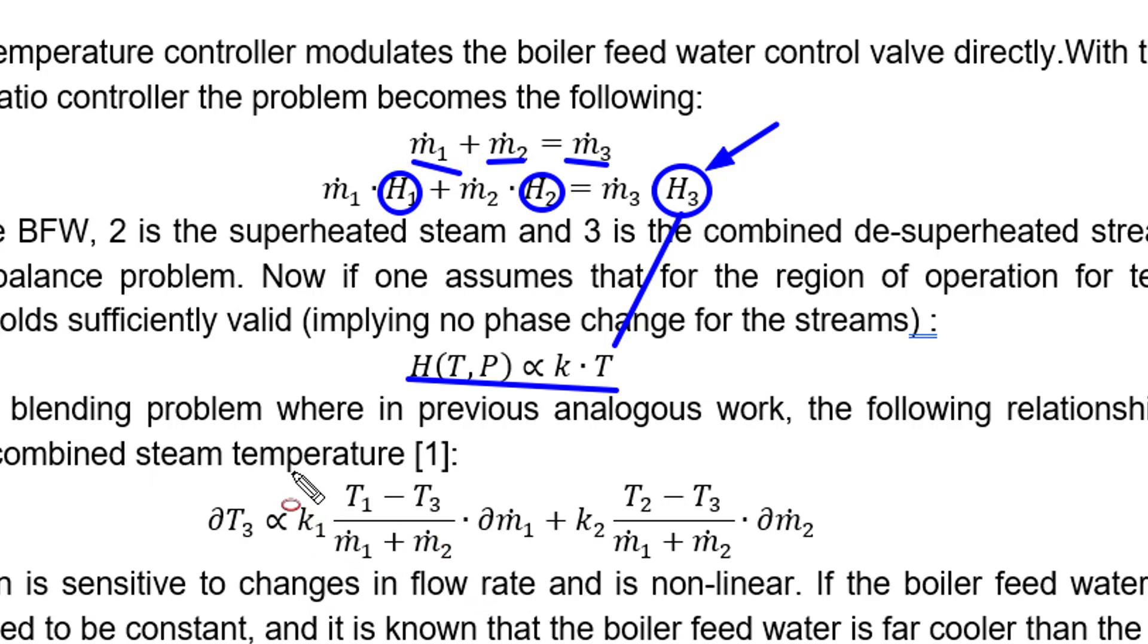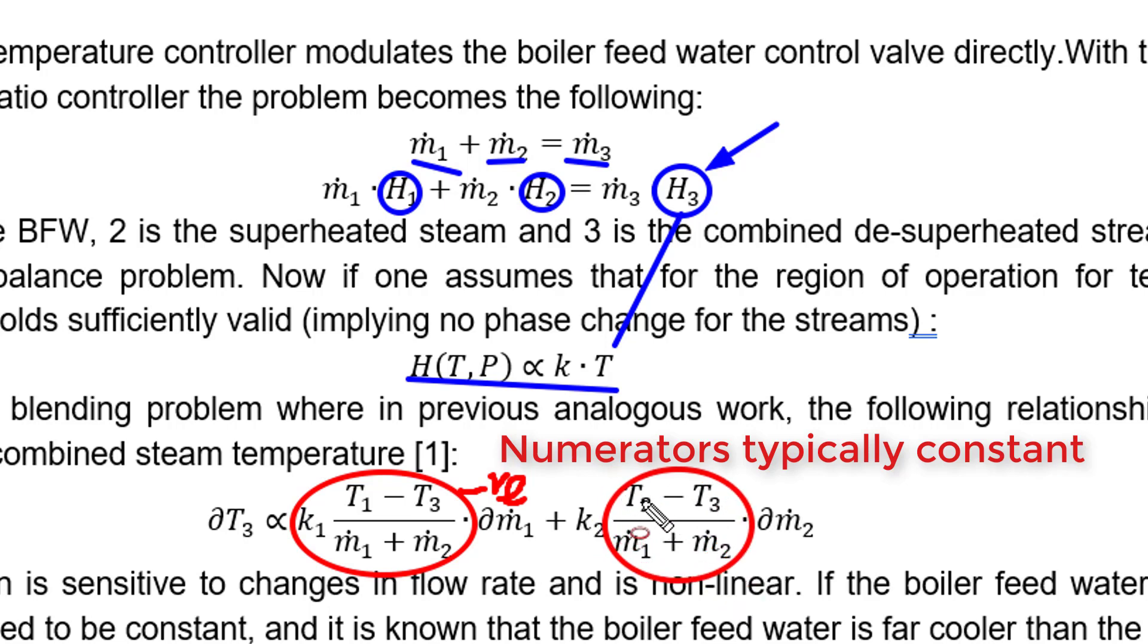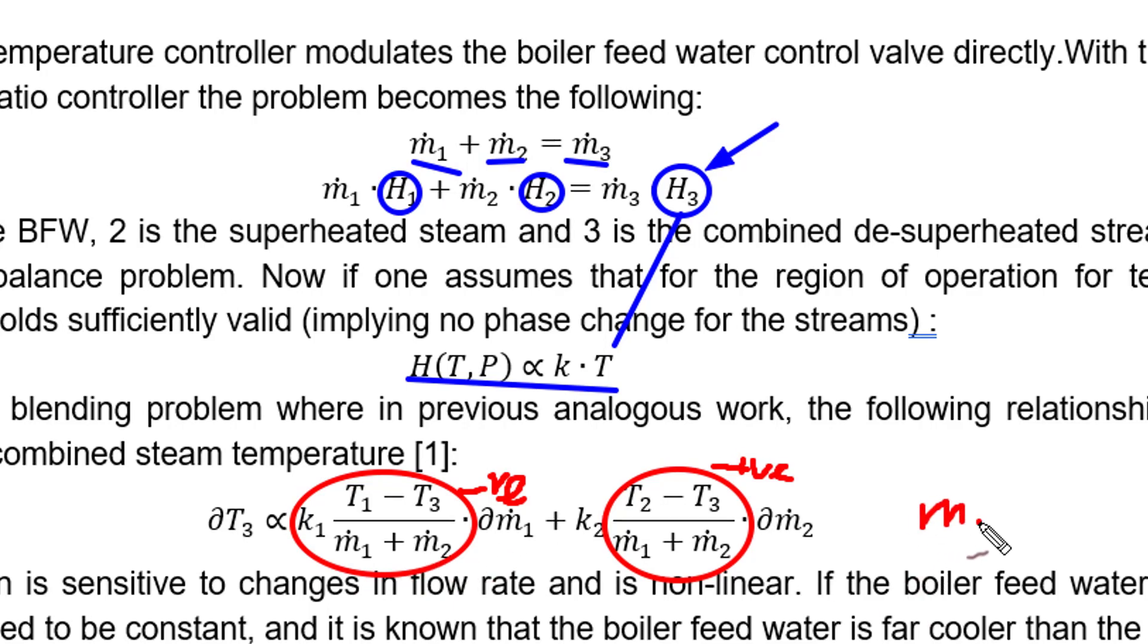If you look at this relationship, typically T1 is going to be less than T3, so this is going to have a negative gain. If I increase the boiler feed water, I have a negative gain. If you look at the second one, temperature T2, that is the superheated HP steam, so this particular one has a positive gain. Now look very carefully at the denominator: the denominator is M1 plus M2, and it's very important.